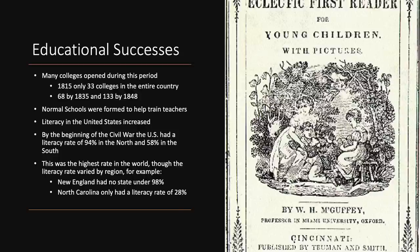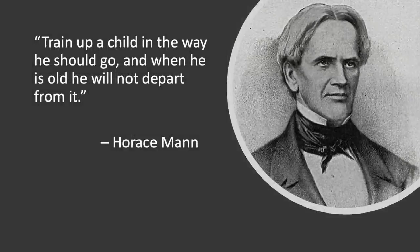Literacy in the United States increased, and by the beginning of the Civil War in 1861, the U.S. had a literacy rate of 94% in the North and 58% in the South — the highest rate in the world, though varying by region. New England had no state under 98%, while North Carolina only had 28%. Normal schools were formed to train future teachers; for example, Eastern Michigan University opened as Michigan State Normal School in 1853. A typical reform in the education movement was teaching children social values: discipline, punctuality, respect for authority, and social order. Horace Mann, citing Proverbs, said, 'Train up a child in the way he should go, and when he is old, he will not depart from it.'